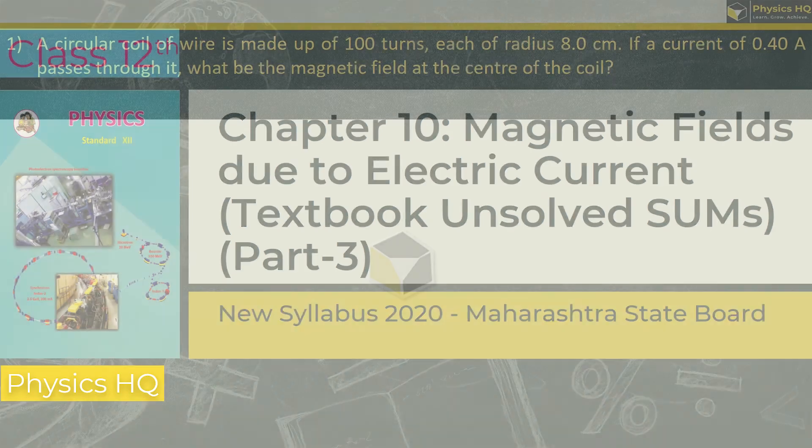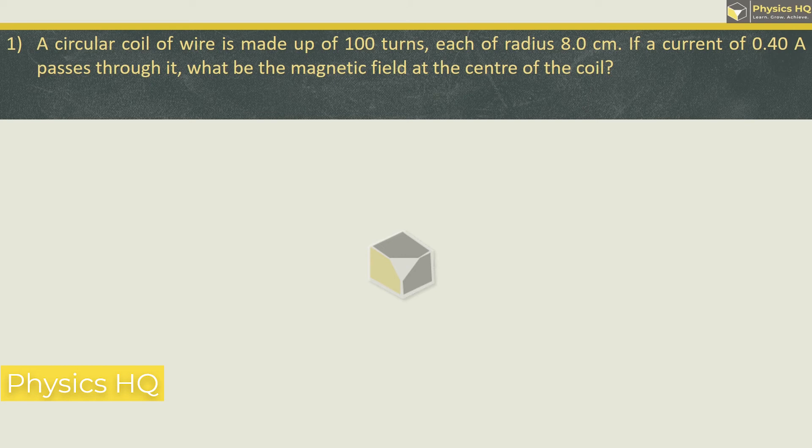So let us start with the first sum. A circular coil of wire is made up of 100 turns, each of radius 8 cm. If a current of 0.4 Ampere passes through it, what will be the magnetic field at the center of the coil?